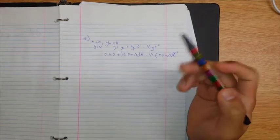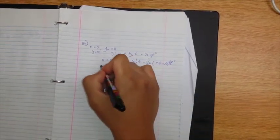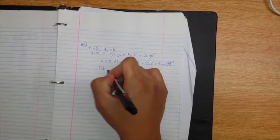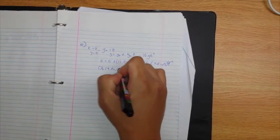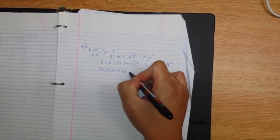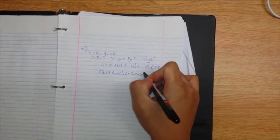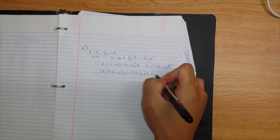This equation can be easily factored by taking out the t: one half 9.8 meters per second squared t minus 12.0 meters per second, which equals 0.